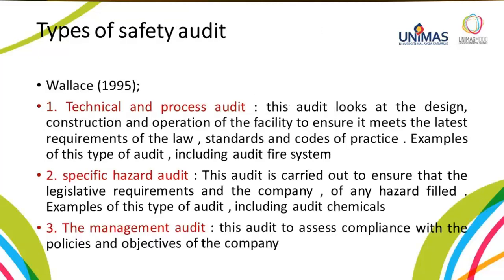There are various types of safety audit, but we will be looking closely at the safety audits by Wireless 1995 and Pibus 1996. According to Wireless 1995, there are three types of safety audit. Number one is the technical and process audit, which looks at the design, construction, and operation of the facility to ensure it meets the latest requirements of the law, standards, and codes of practice. One example of this type of audit is the audit of fire systems.